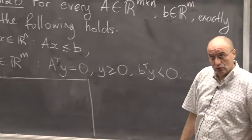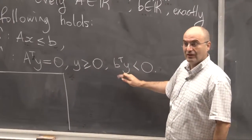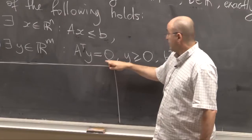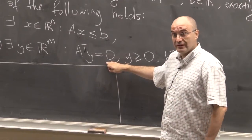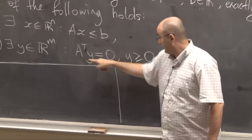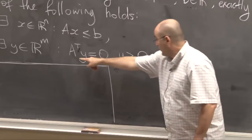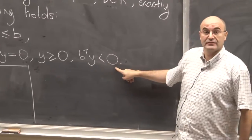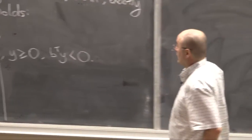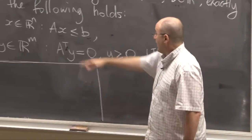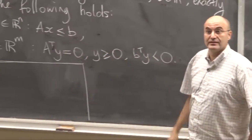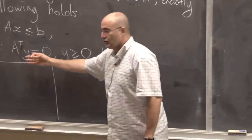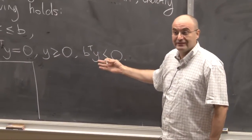So either the system of linear inequalities has a solution, or another system has a solution. If this system is unsolvable, then there exists a vector Y such that A-transpose Y is the zero vector — Y is non-negative, every component of Y is non-negative — and B-transpose Y is strictly less than zero. This is quite beautiful: if a system is solvable you give a solution for easy verification, and if unsolvable this theorem gives an equally easy-to-verify certificate via an alternative system.